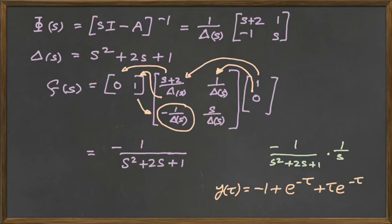Now if we want to find the step response, we have to substitute 1 over s for u(s) there on the right hand side of the transfer function.